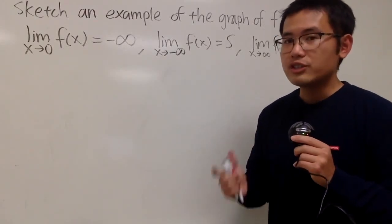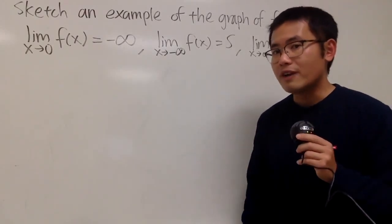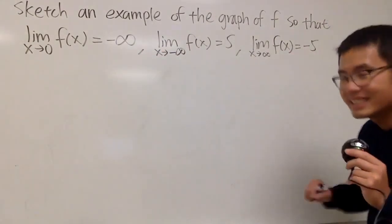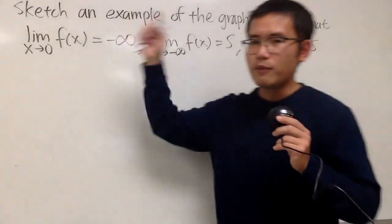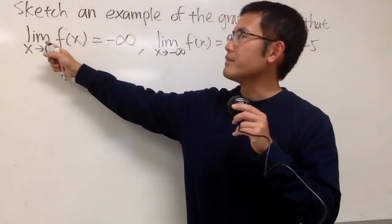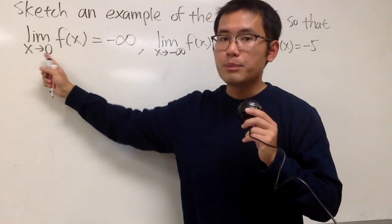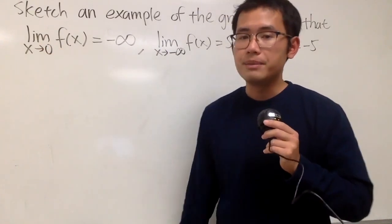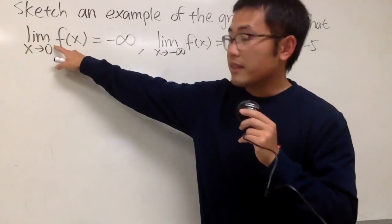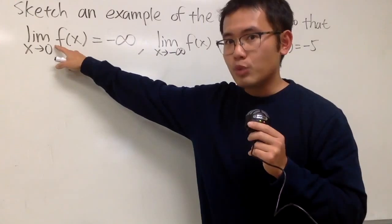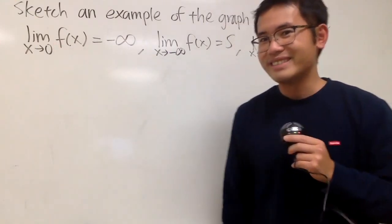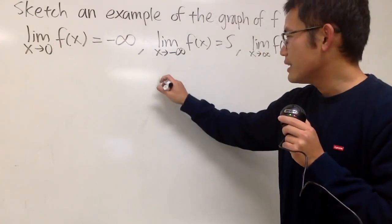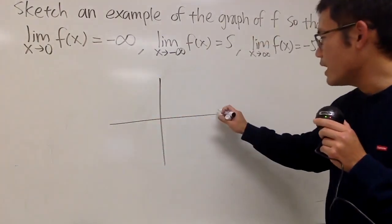For this question, we are going to sketch an example of the graph of a function so that we have these three limits. Let's look at the first one right here. We have to have the limit as x approaching zero of the function to be negative infinity. This right here does not have plus or minus, that means both directions. Let's go ahead and just come up with the graph along the way.